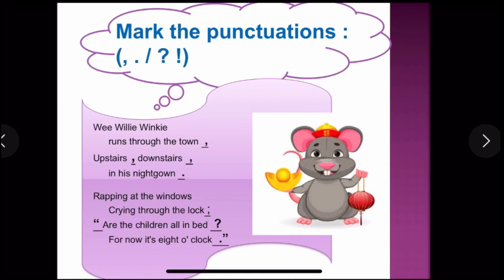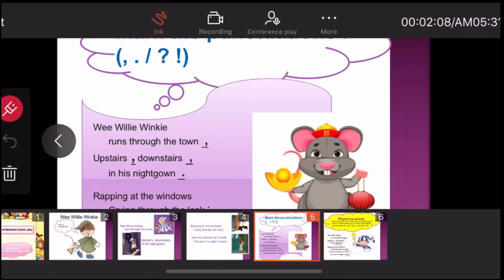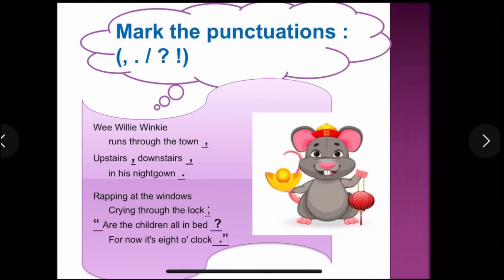Now we'll mark the punctuations. What are punctuations? Punctuations are comma, full stop, question mark, exclamatory mark. I have marked some of the punctuations in this poem. 'Runs through the town' — there is a comma. Upstairs, comma; downstairs, comma; in his nightgown, full stop. Rapping at the window, crying through the lock — semicolon, inverted comma start, question mark, inverted comma close, and full stop. I have marked all the punctuations, and you do the same.